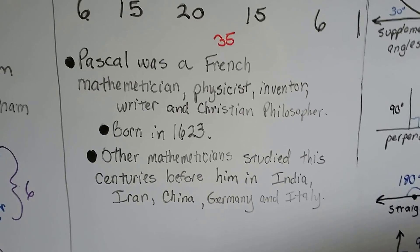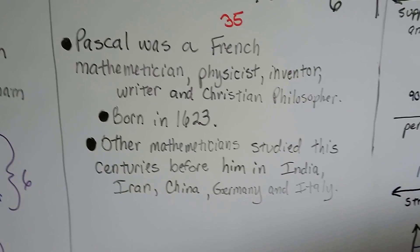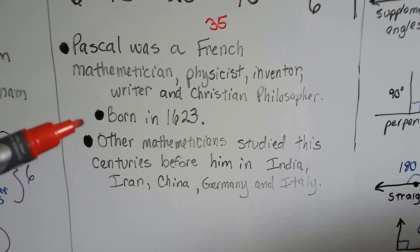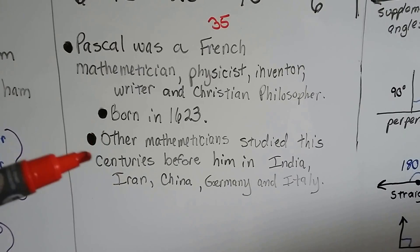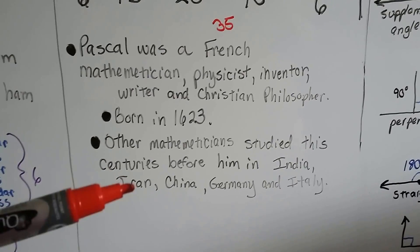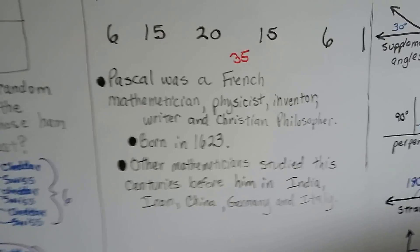Well, Pascal was a French mathematician, physicist, inventor, writer, and Christian philosopher. And he lived in the 1600s. But other mathematicians studied the centuries before him in India, Iran, China, Germany, and Italy. But they still named it after Pascal.